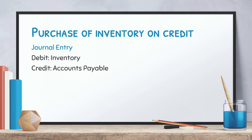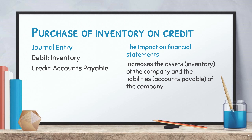This journal entry increases the assets of the company and the liabilities of the company. Let's break it down step by step. When a company purchases inventory on credit, it is essentially borrowing money from its supplier.